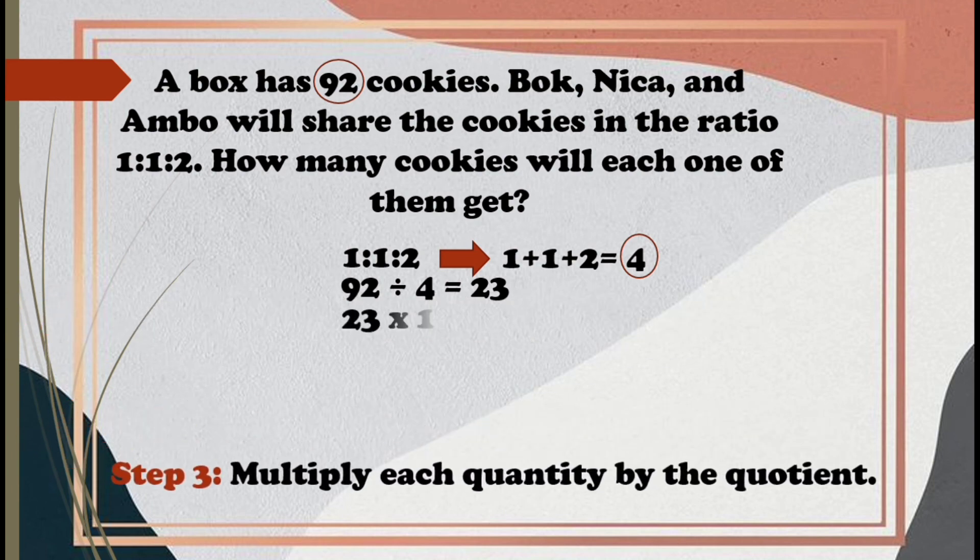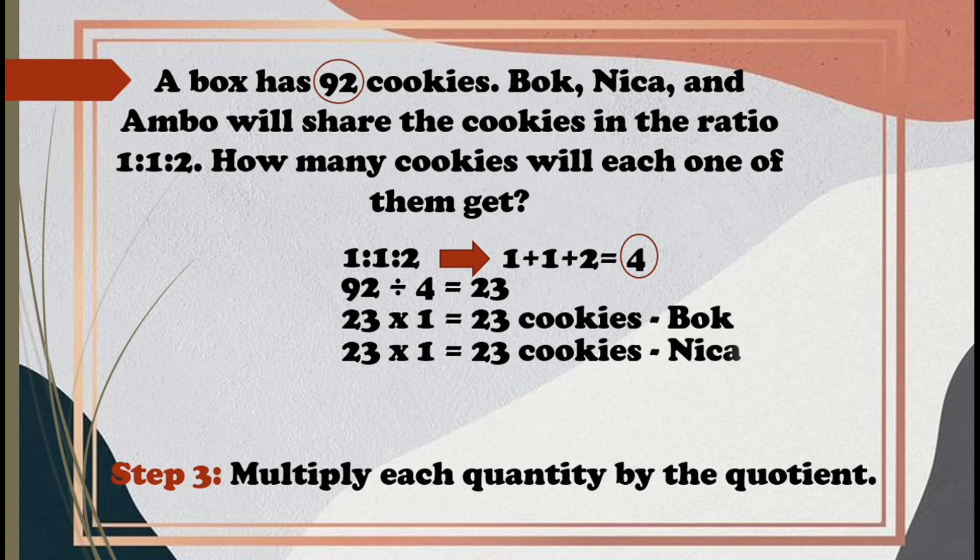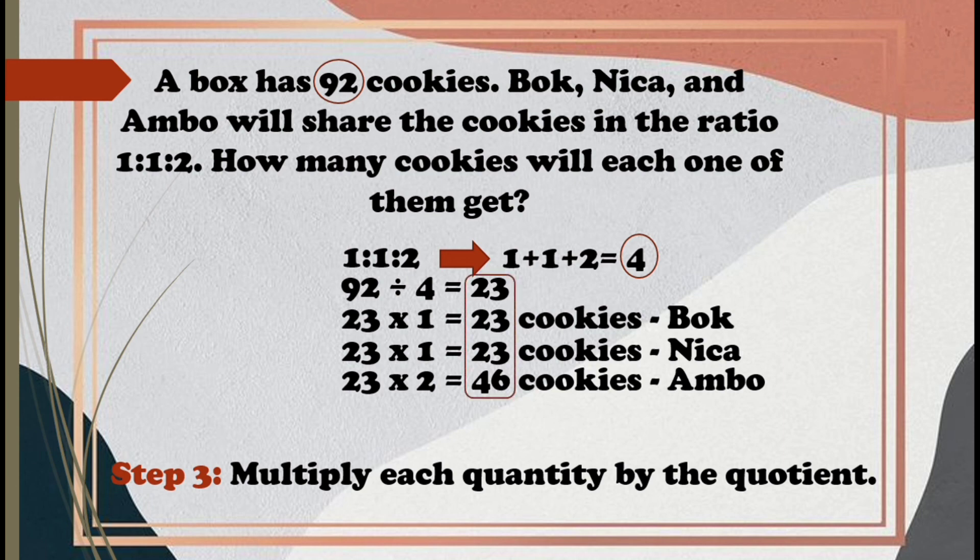23 times 1 is 23 cookies for Bok. 23 times 1 is 23 cookies for Nika. Lastly, 23 times 2 is 46 cookies for Ambo. Now, let's check if our answer is correct. Let us add the number of cookies each one of them get. 23 plus 23 plus 46 is 92. Great job, students! You've made it!